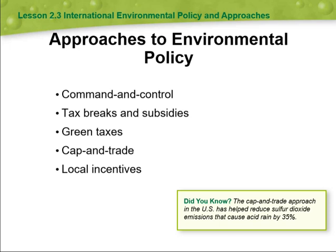Command and control is a term used to describe a centralized system where decisions and orders are given from a central authority to subordinate units or individuals. In command and control systems, there is a clear chain of commands with a top-down approach to decision-making and communication. This helps in maintaining discipline.